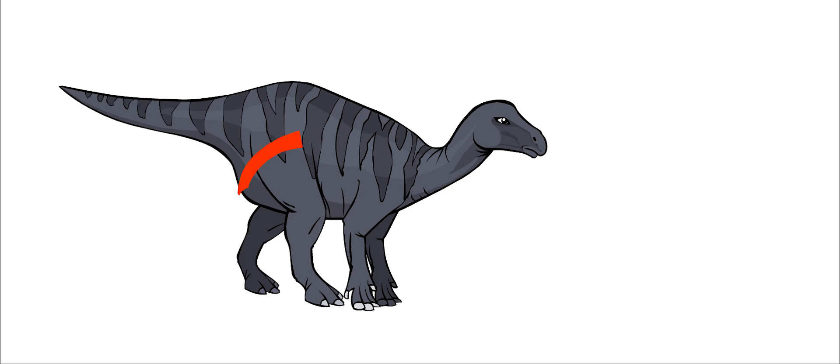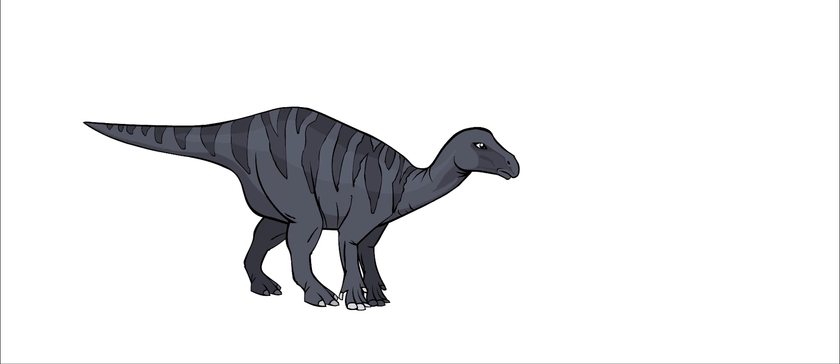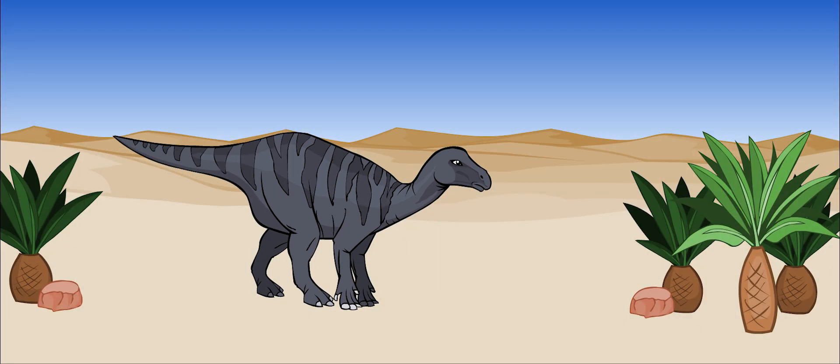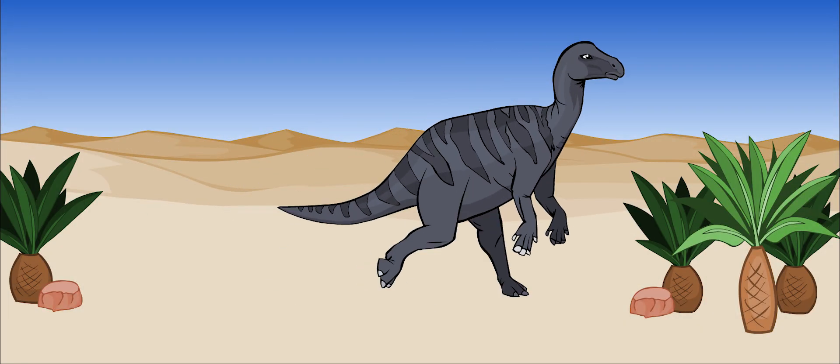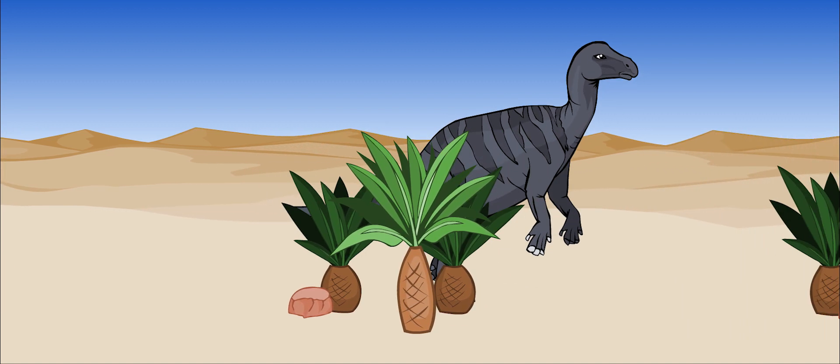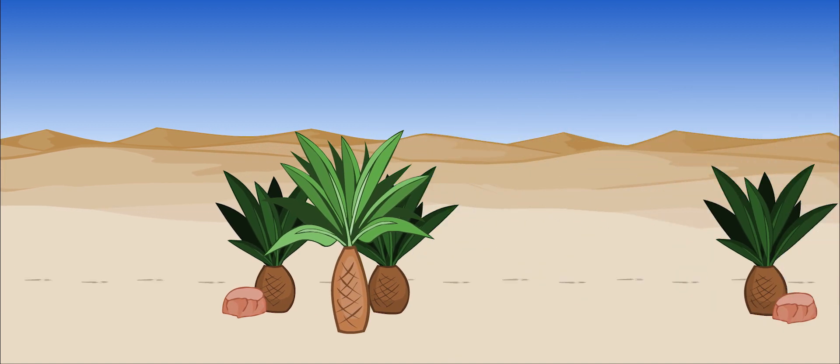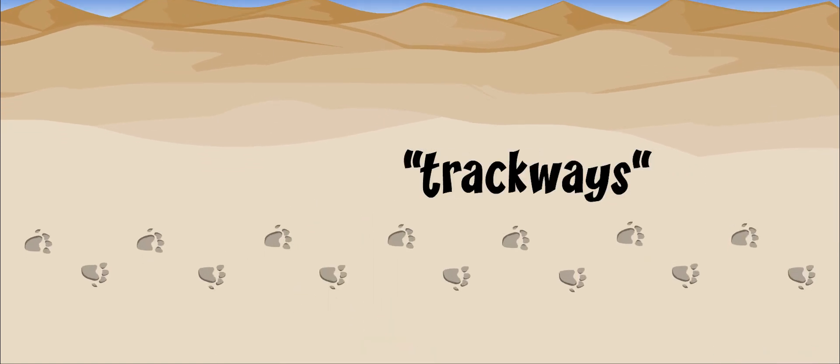Iguanodon had thick, powerful back legs. Its front legs were thinner and lighter. It spent most of its time on all fours, but could run on two legs when it needed to move quickly. It was a relatively fast dinosaur. We know this by studying the dinosaur's trackways or footprints.